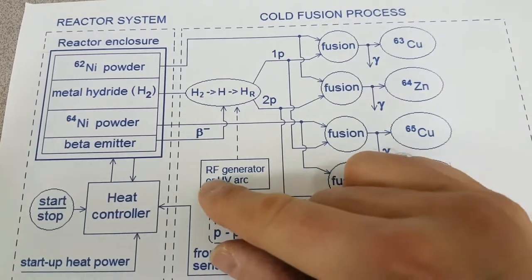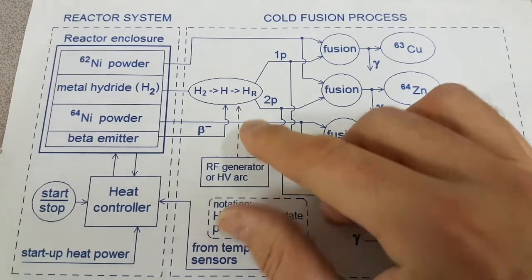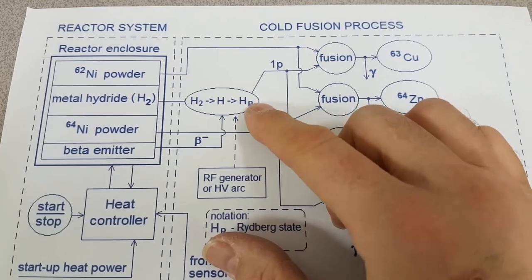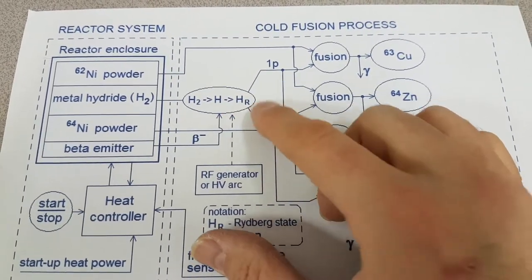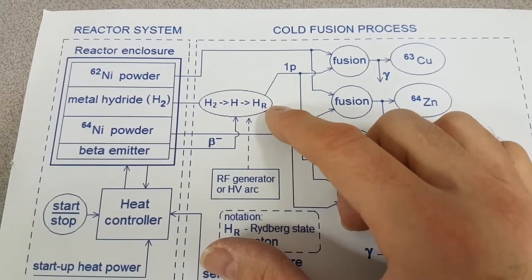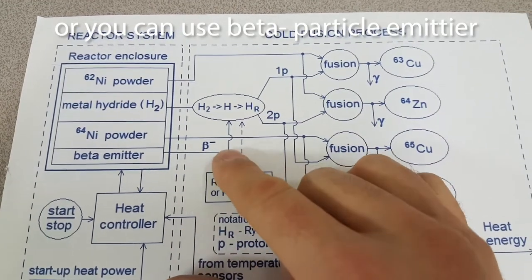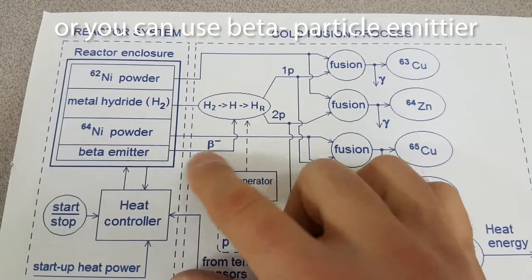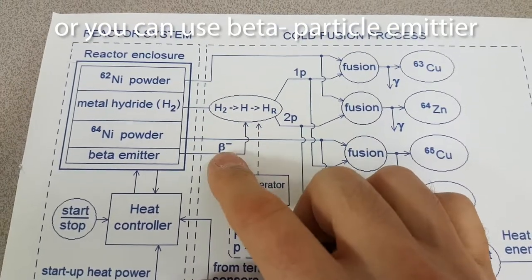So he's saying to create these, you need an RF generator or an HV arc to create your Rydberg state hydrogen, which forms into clusters. And then he says you need beta particles. Now, this is very interesting.